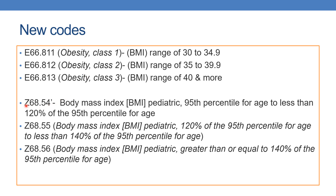The new codes under the pediatric section are Z68.54. The description for this code has been modified. Z68.54 indicates body mass index pediatric 95th percentile for age to less than 120 percent of the 95th percentile for age.